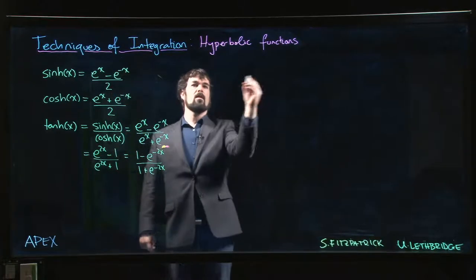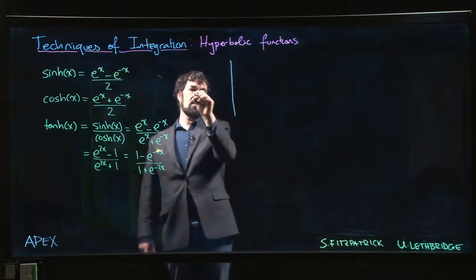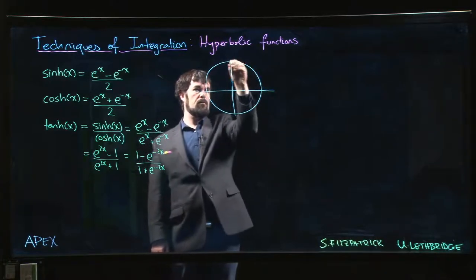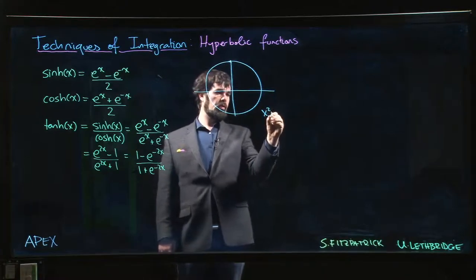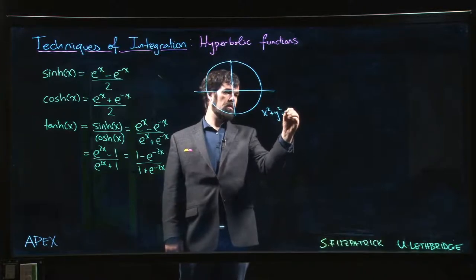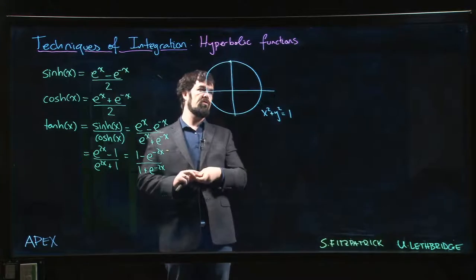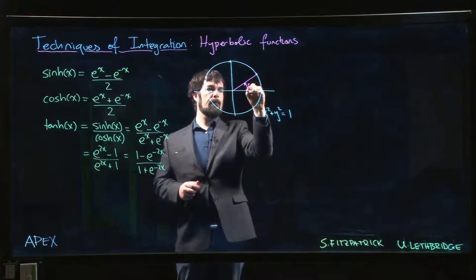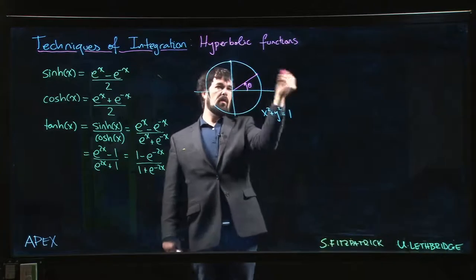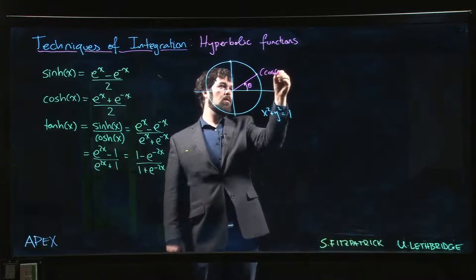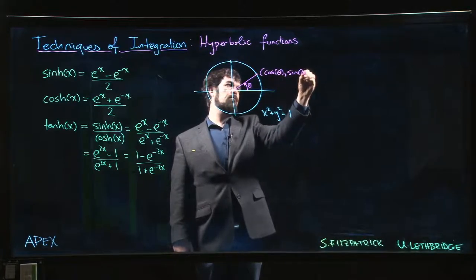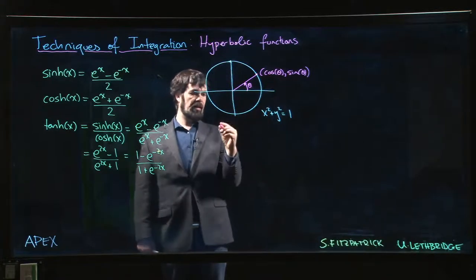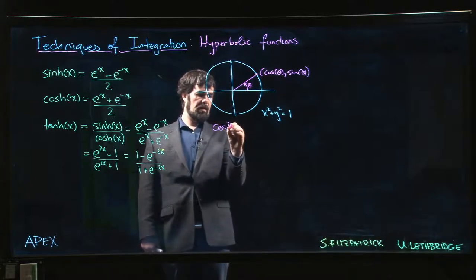Now the reason these are called hyperbolic functions is the following. Let's remind ourselves that for trig functions, if we have the unit circle x squared plus y squared equals 1, and we choose some point on that unit circle making an angle of theta with the positive x-axis, we know that the coordinates of that point are given by cos theta, sine theta. Which means the two elementary trig functions sine and cosine satisfy this all-important Pythagorean identity: cos squared theta plus sine squared theta is equal to 1.